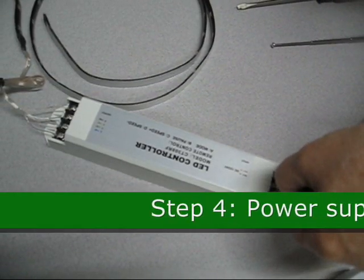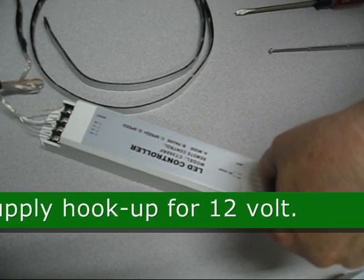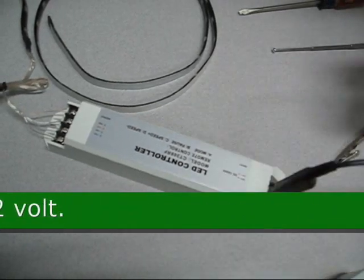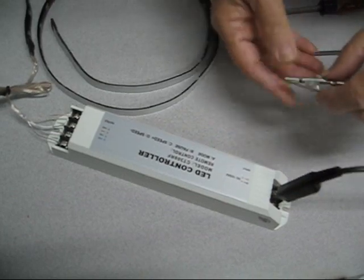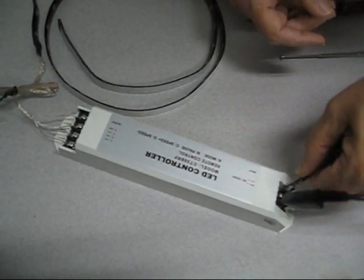Step 4. Power supply hookup for 12V. Connect the black wire to the screw labeled as negative and connect the red wire to the screw labeled as positive.